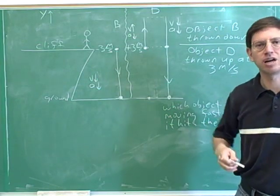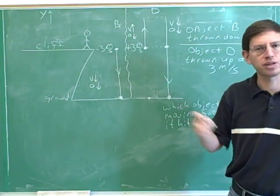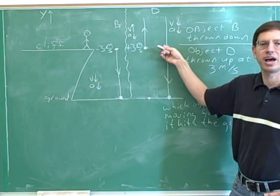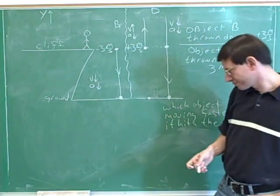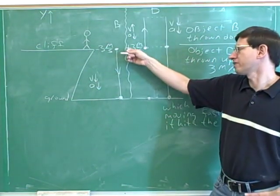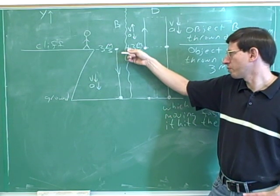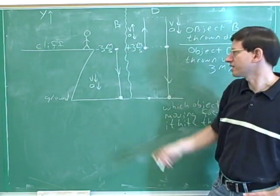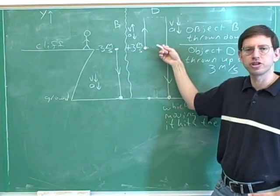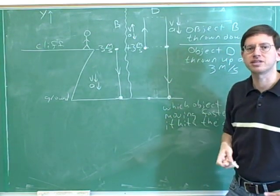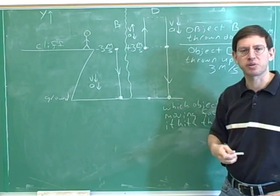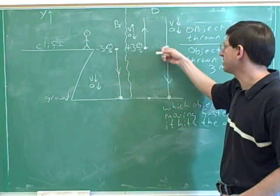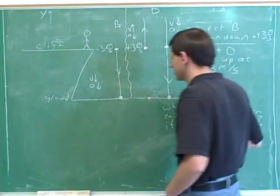Here we use the symmetry of projectile motion, an issue discussed in the previous example as well. These two points are at the same height above the ground. So if the speed here was three meters per second, then the speed here should also be three meters per second. Two points at the same height should have the same speed — that's part of the symmetry of projectile motion. So the velocity at this point would be negative three meters per second.